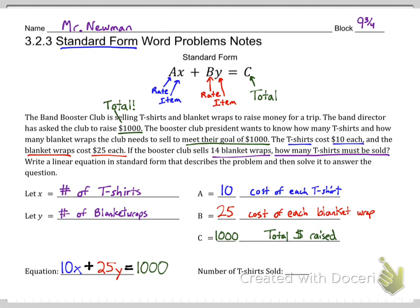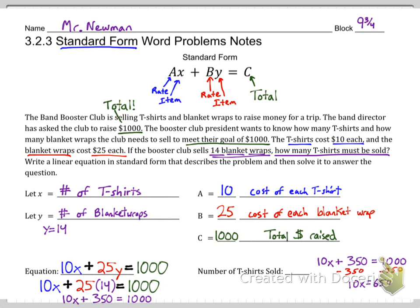Now to solve the problem, we usually are given x or y. In this case, we're told that there are fourteen blanket wraps and we made blanket wraps be y. If we had called blanket wraps x and t-shirts y, our rates would have switched and we would have had an equation that is just as valid. But in this case, blanket wraps is y here. So y equals fourteen. That means we're just going to plug in fourteen and solve for x. So let's plug in fourteen right there instead of y. And to solve this, we need to multiply those out. Twenty-five times fourteen is three fifty. Let me rewrite the equation over here. Then we're going to subtract three fifty and divide by ten. So x equals sixty-five. What does that mean? Well, that means that there are 65 t-shirts sold.